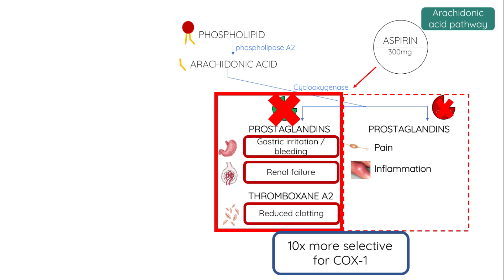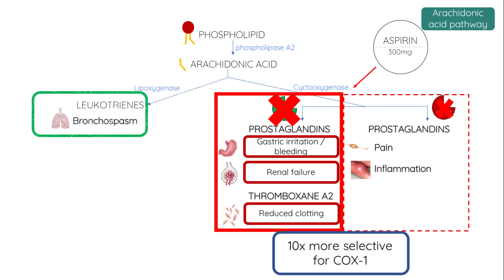Another side effect to quickly mention is that aspirin can possibly induce bronchospasm, because arachidonic acid is also a precursor to molecules called leukotrienes, which are pro-inflammatory cytokines that can cause bronchospasm. Aspirin upregulates the production of these, leading to the development of so-called aspirin-induced asthma.